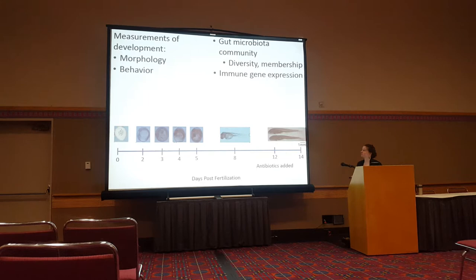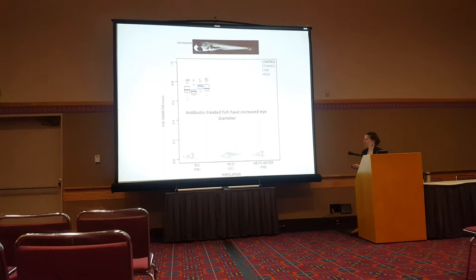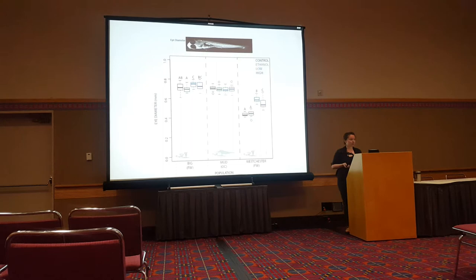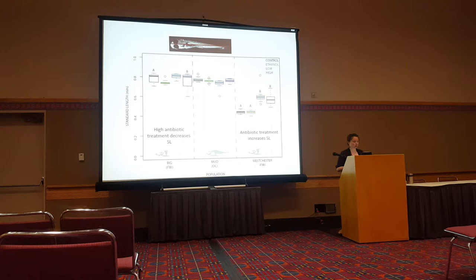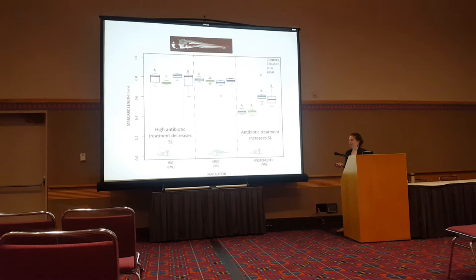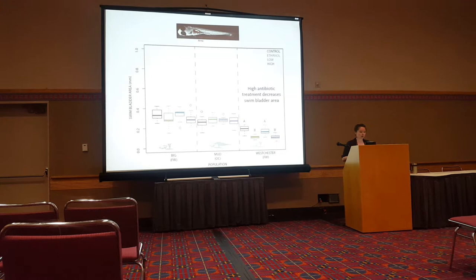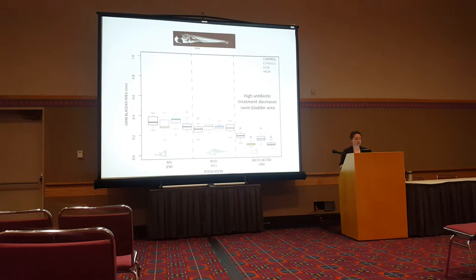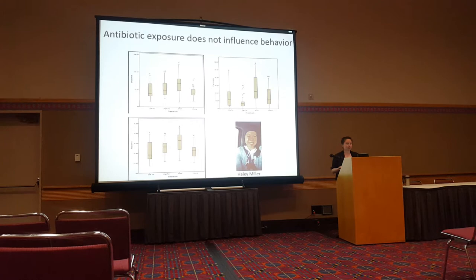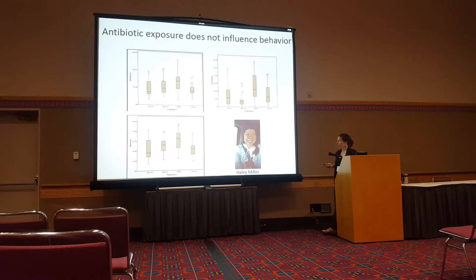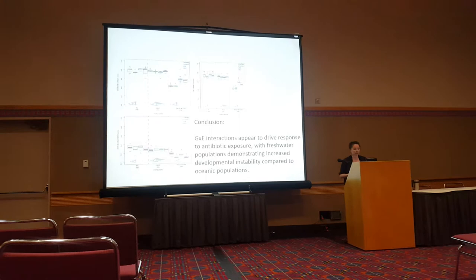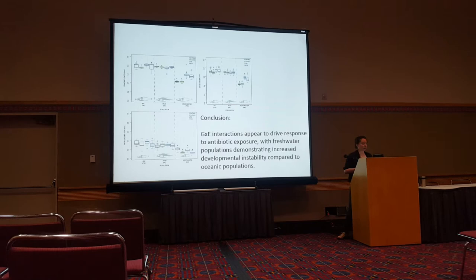Antibiotic-treated fish show increased eye diameter in both Big Lake and Westchester freshwater populations, but no difference in eye diameter in the Mud Lake oceanic population. High antibiotic treatment decreases standard length in Big Lake fish but has the opposite effect in Westchester fish, with again no morphological difference in Mud Lake. High antibiotic treatment also decreases swim bladder area only in the Westchester freshwater population. Behavioral results show no significant differences in any of the three populations. We conclude that gene-by-environment interactions drive responses to antibiotic exposure, with freshwater populations showing increased developmental instability compared to the oceanic population.